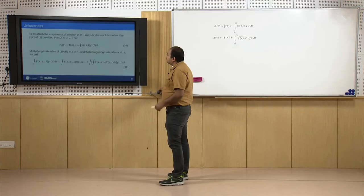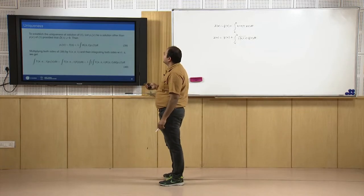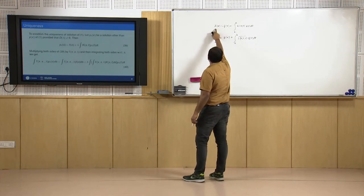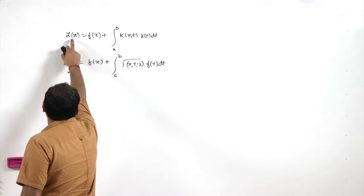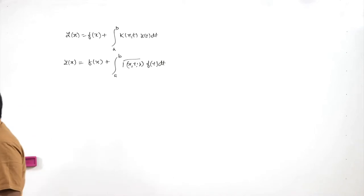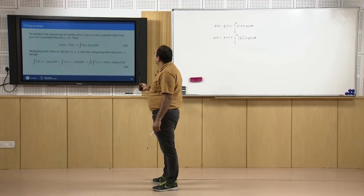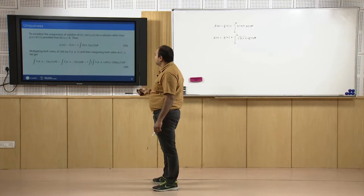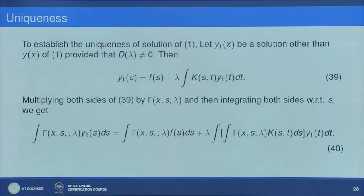Now suppose we have another solution y₁(x) which also satisfies equation number 39 — not only y, but another solution y₁ satisfying the same equation. We try to show that y₁ is nothing but y. Here we assume that y₁ is another solution of the Fredholm equation: y₁(x) = f(x) + λ∫k(s,t)y₁(t)dt. We try to show this y₁ equals y(x).